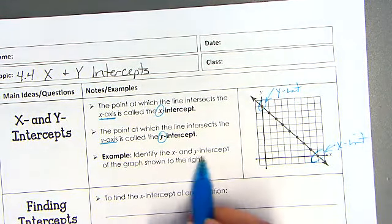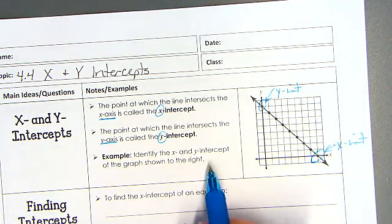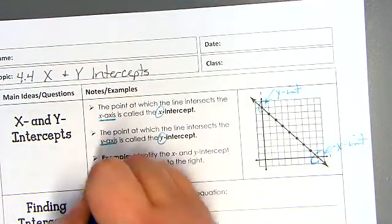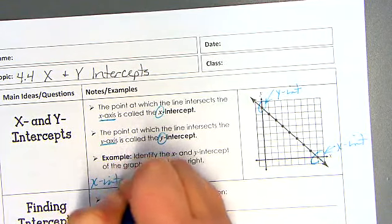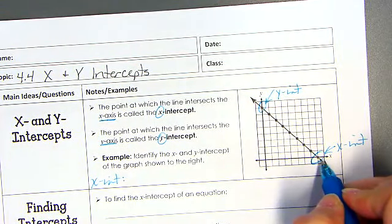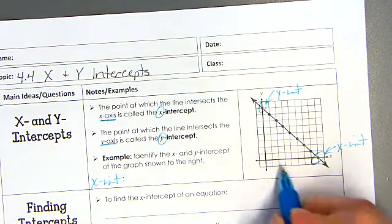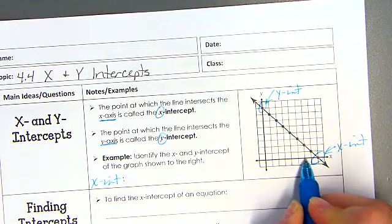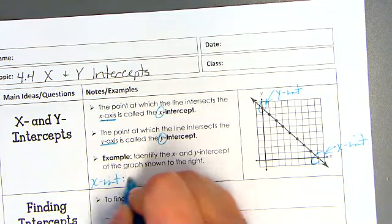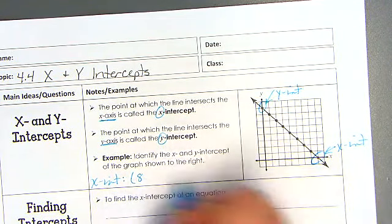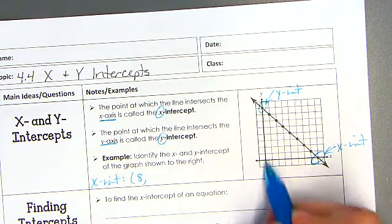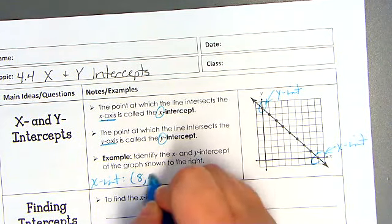So an example: identify the x and y intercepts of the graph shown to the right. So my x-intercept is going to be an ordered pair. This ordered pair right here is going to be, it's located at 1, 2, 3, 4, 5, 6, 7, 8. So this is 8 on the x-axis and it doesn't go up or down any, so it's at 0 on the y-axis. So there's my x-intercept.